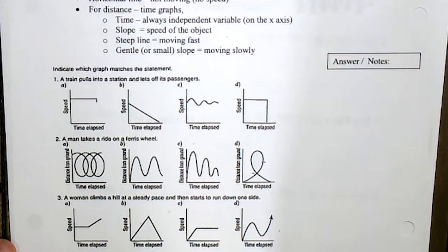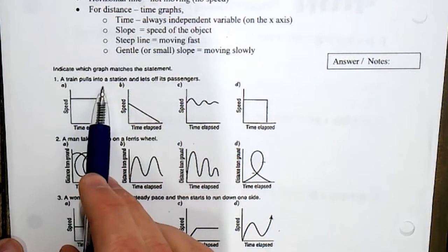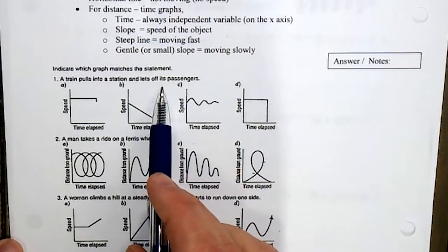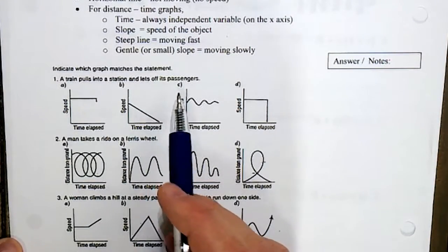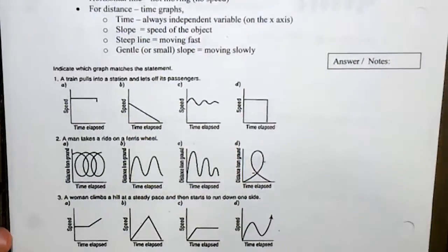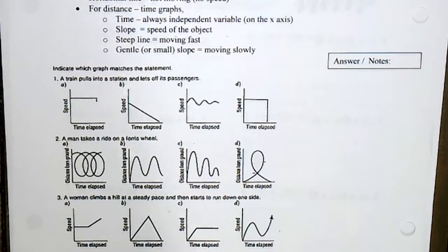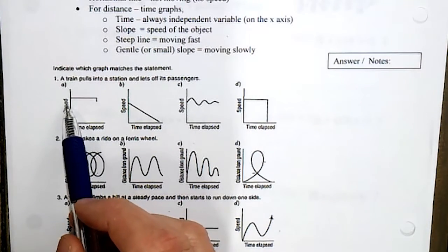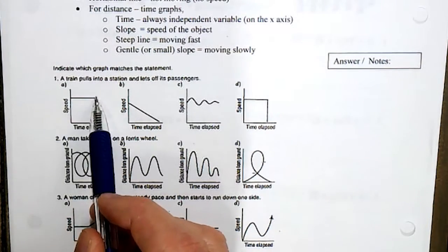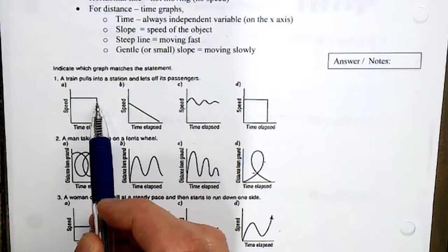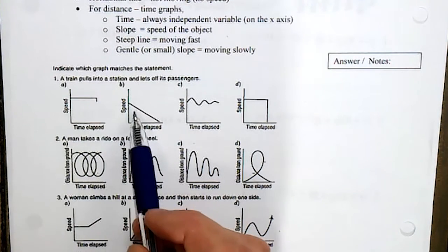So number one: a train pulls into a station and lets off its passengers. Now the key thing, we have to visualize what happens when the train comes to a station - it's probably slowing down in speed and then stops before letting out the passengers. So speed has to be - well, this one's going fast and then just stops like it hit a brick wall, can't be this one. This one, speed is slowing down and stops - that one looks good.